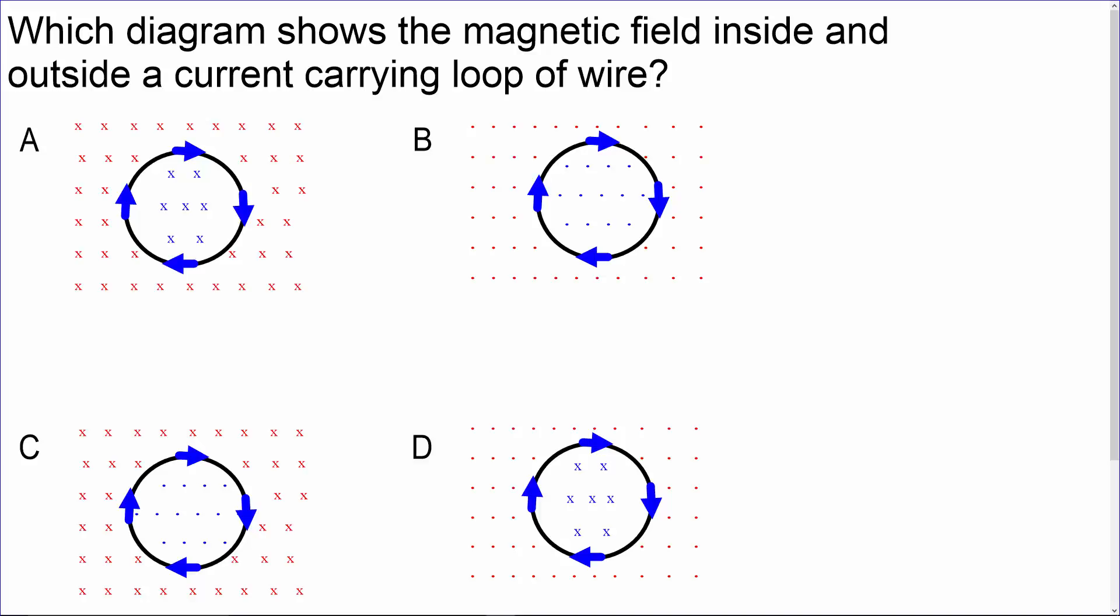Which diagram shows the magnetic field inside and outside a current-carrying loop of wire? This loop of wire shows that the current is going around in a clockwise direction.